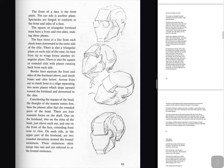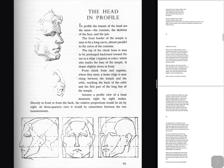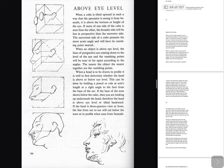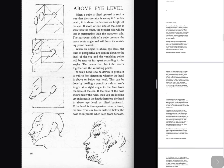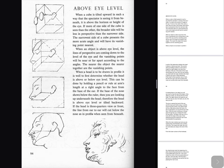The head in profile: In profile the masses of the head are the same — the cranium, the skeleton of the face, and the jaw. The front border of the temple is seen to be a long curve, almost parallel to the curve of the cranium. The top of the cheekbone is seen to be prolonged backward toward the ear as a ridge, zygoma or yoke, which also marks the base of the temple. It slopes slightly down in front. From cheekbone and zygoma where they meet, a lesser ridge is seen rising between the temple and the orbit, marking the back of the orbit in the first part of the long line of the temple. Assume a profile view of a head measures eight by eight inches. Directly in front or from the back, the relative proportions would be six by eight. At three-quarters view it would be somewhere between the two measurements. Above eye level: when a cube is tilted upward in such a way that the spectator is seeing it from beneath, it is above the horizon or height of the eye. The narrowest side of the cube presents the more acute angle and will have its vanishing point nearest. When an object is above eye level, the lines of perspective are coming down to the level of the eye and the vanishing points will be near or far apart according to the angles.